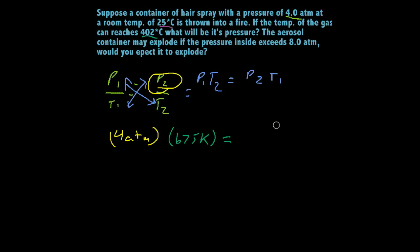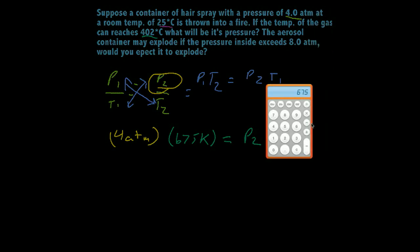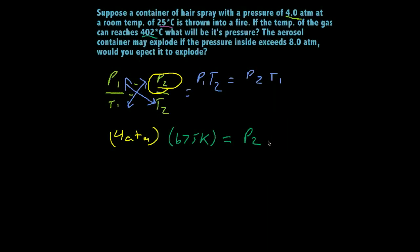And that's going to equal our P2, which we don't know, and our T1, which is 25 degrees Celsius. And I did that in a mauve color there, it looks like. 25 degrees Celsius. So 25 plus 273 equals 298 degrees Kelvin, 298 degrees Kelvin.